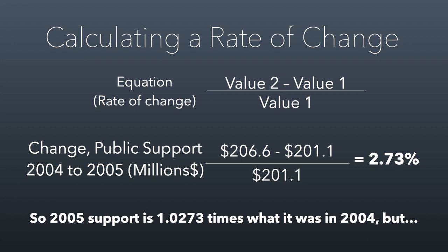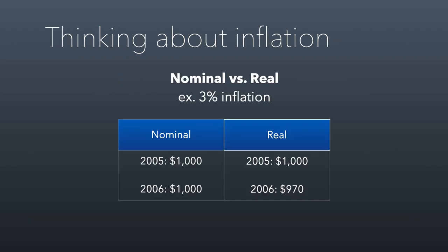But there's a problem, and the problem has to do with nominal versus real dollars. Here I'm using an example of 3% inflation. When we talk in terms of nominal dollars, nominal means in name only, meaning they're only dollars because the dollar bill has $1 printed on it. But the economic value of that dollar is actually the real value and is going to change over time. In terms of nominal dollars, $1,000 from one year to the next stays the same. But in terms of real dollars, your money in 2005 is worth more than it is in 2006, and that's because of inflation.